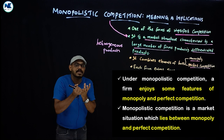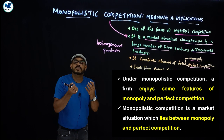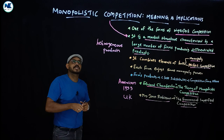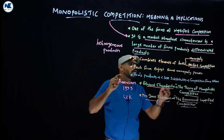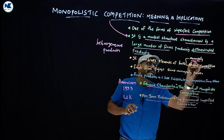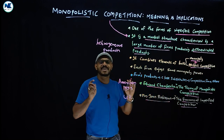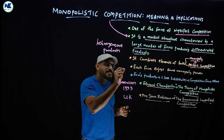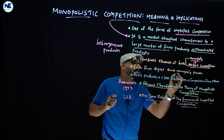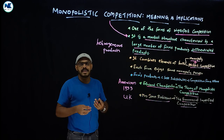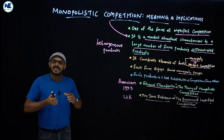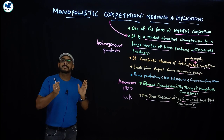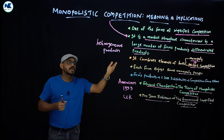We can simply say: monopolistic competition equals monopoly plus perfect competition. Each firm under monopolistic competition enjoys some monopoly power because each firm produces a differentiated product, giving it some influence over the price and output of its brand.